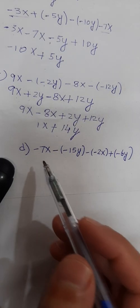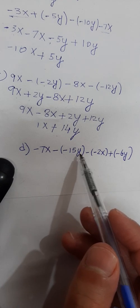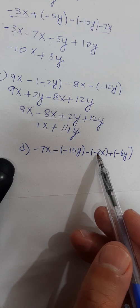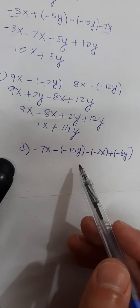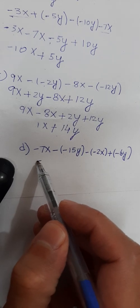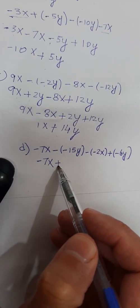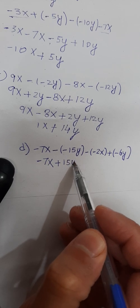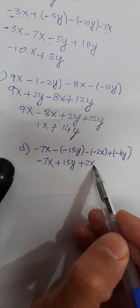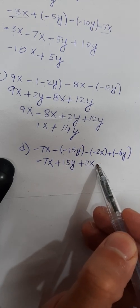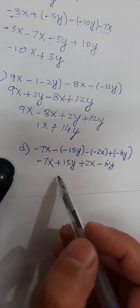Part d is minus 7x minus bracket minus 15y minus bracket minus 2x plus bracket minus 6y. Open the brackets first: it is minus 7x. Minus into minus is plus 15y. Minus into minus is plus 2x, and plus into minus is minus 6y.